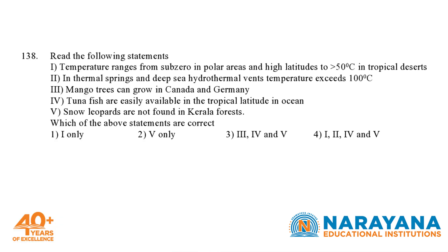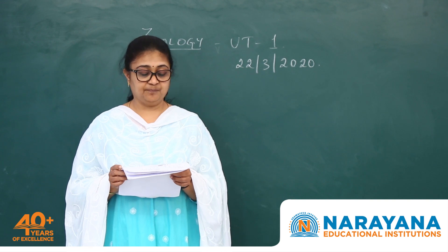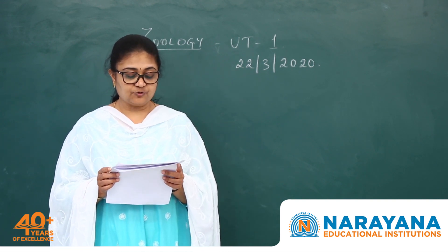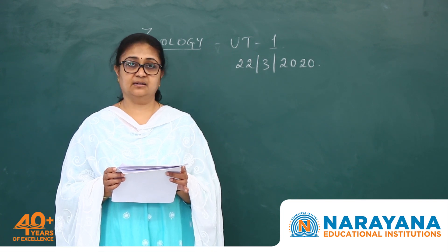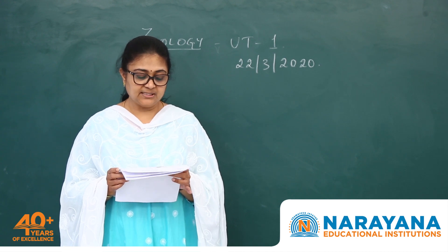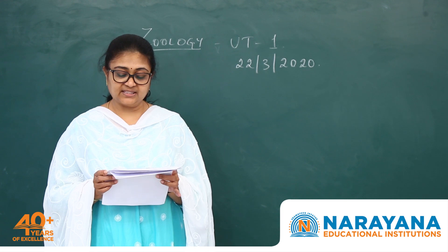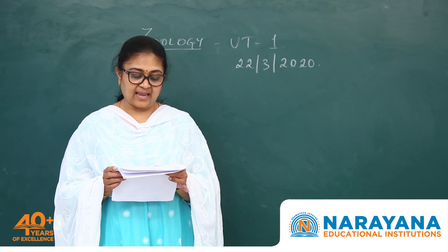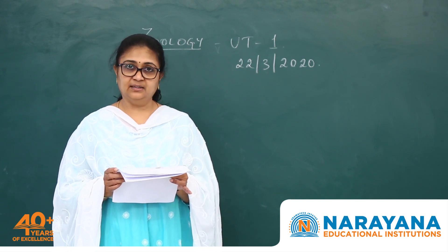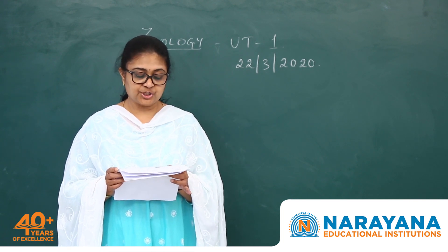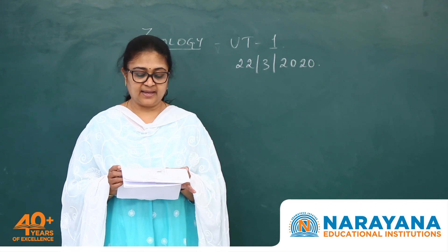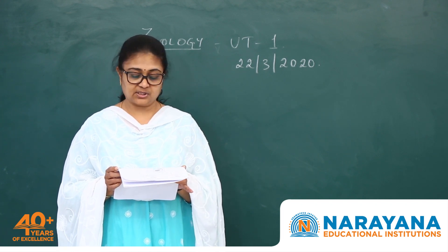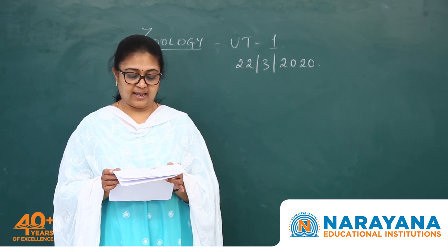Question 138: we have to identify which statements are correct. Statement 1 — temperature ranges from subzero in polar areas and high altitudes to more than 50 degrees centigrade in tropical deserts — is correct. Statement 2 — in thermal springs and deep sea hydrothermal vents, temperature exceeds 100 degrees centigrade — is also true. Statement 3 — mango trees can grow in Canada and Germany — is incorrect, as they cannot grow in cold countries. Statement 4 — tuna fish are available in tropical latitudes — is true. Statement 5 — snow leopards are not found in Kerala forests — is obviously correct as they are found only in cold regions. So the correct statements are 1, 2, 4, and 5; the fourth option is right.